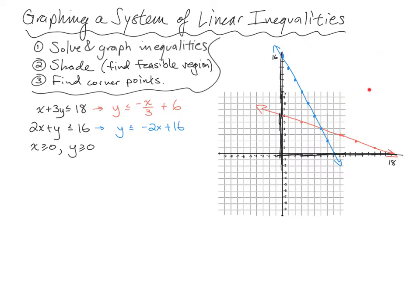We need to know which area we're talking about — that's the second step, shading. The good news is we only have to pick one point. I want to pick the point three comma eight. I promise this is going to work for both lines as long as we don't pick a point on the line. We'll substitute this x value and y value into both inequalities. We don't have to do it for the non-negative constraints because we already know we should be picking something from the first quadrant.